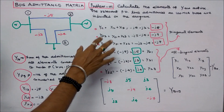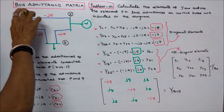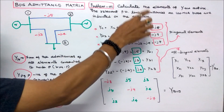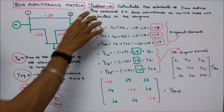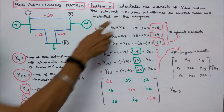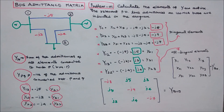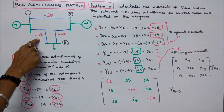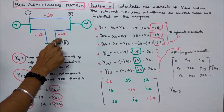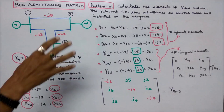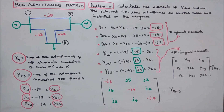In this class we work out two problems on bus admittance matrix. Problem number one: calculate the elements of the Y-bus matrix. The relevant per unit line admittances on 100 MVA base are indicated on the diagram. This line admittance is minus J5, this line admittance is minus J3, and this line admittance is minus J4. First step: find the diagonal elements. Second step: find the off-diagonal elements. Third step: form the Y-bus matrix.